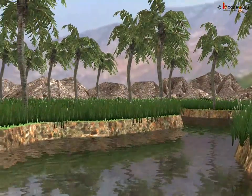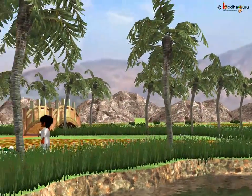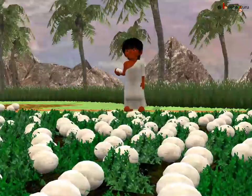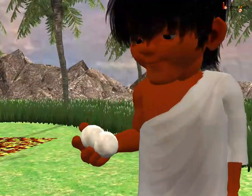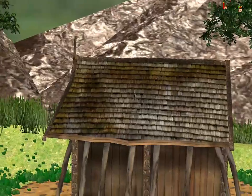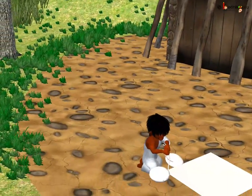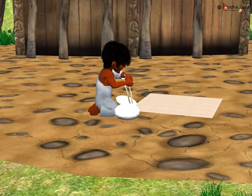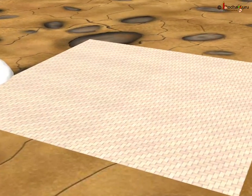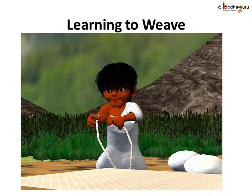Gradually, people learnt about agriculture. They learnt how to grow plants like cotton. Slowly, they also learnt to weave the twigs and grass into mats and baskets. They learnt to make yarn out of animal fleece by twisting it together into long strands. As they knew about weaving, fabrics could be made out of these yarns.